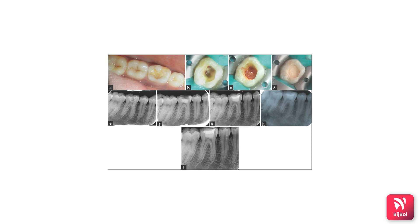The hemorrhage is controlled and biocompatible material such as MTA is placed onto the pulp orifices, then sealed with IRM. On the follow-up radiograph, no periapical abscess is observed, demonstrating successful treatment of acute irreversible pulpitis with pulpotomy.